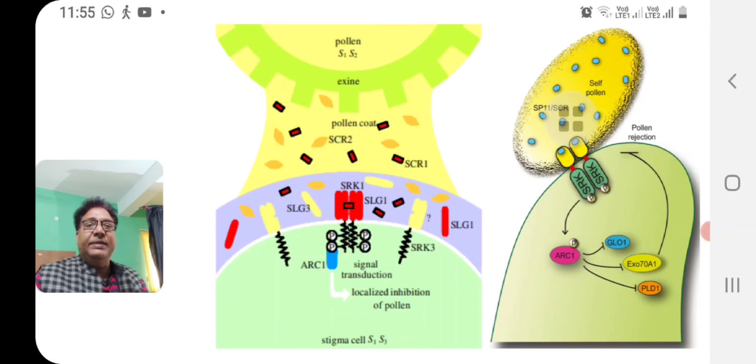Another protein called SLG, S locus glycoprotein, has also been found to be produced by the pistillate female plant. The role of SLG is not clear, but probably it binds with the SRK and enhances the binding of SCR with SRK somehow. The research is going on.